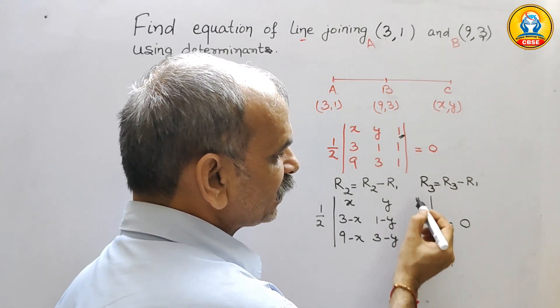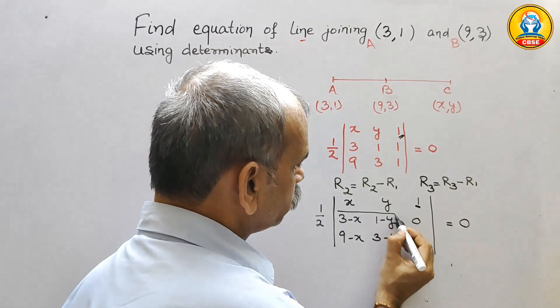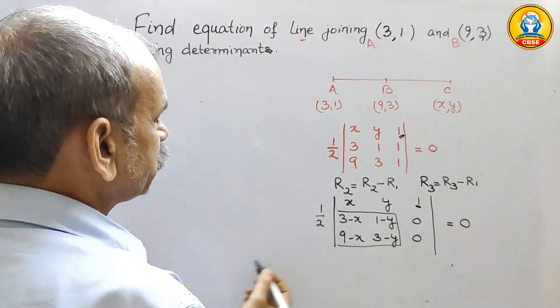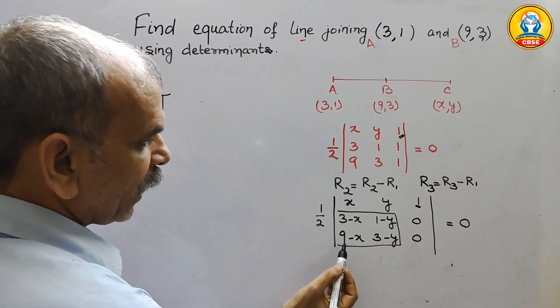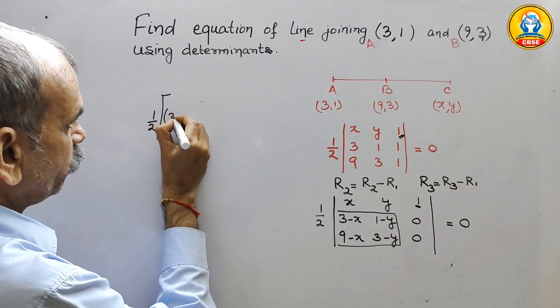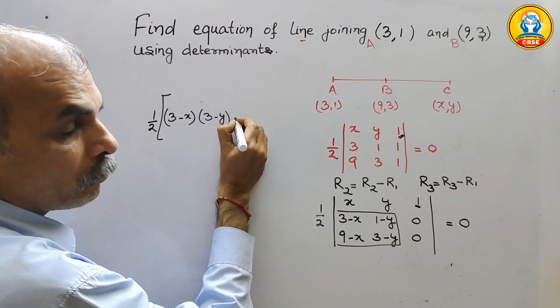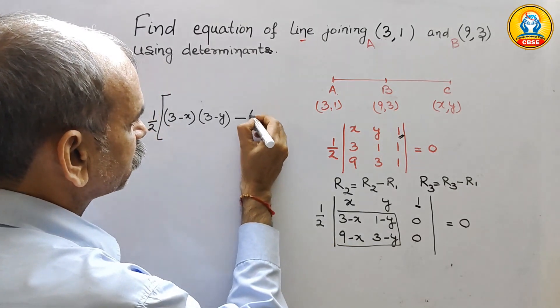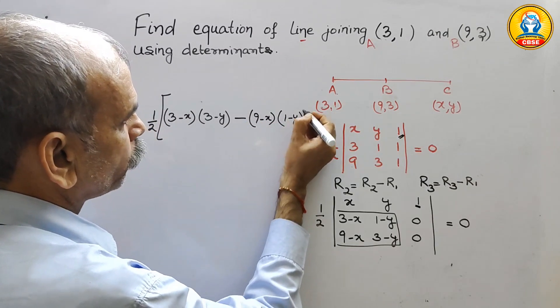So now, here 1 is there and others are 0 in that column. So that means, we have to solve this only. So solve this by cross multiplication. Now, this is 1 by 2. Now, multiply this. 3 minus x, 3 minus y. Next comes your minus sign when we are going in this direction. This will be 9 minus x and this will be 1 minus y.